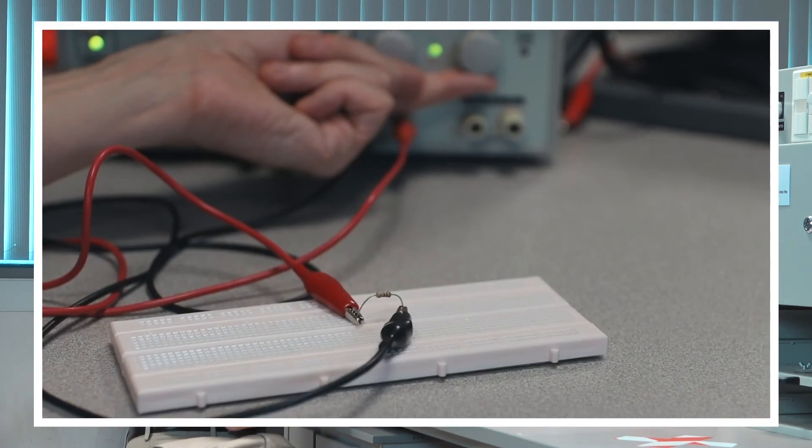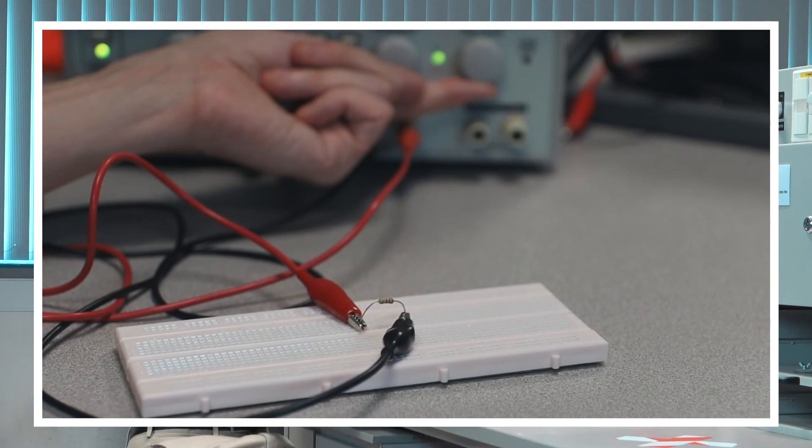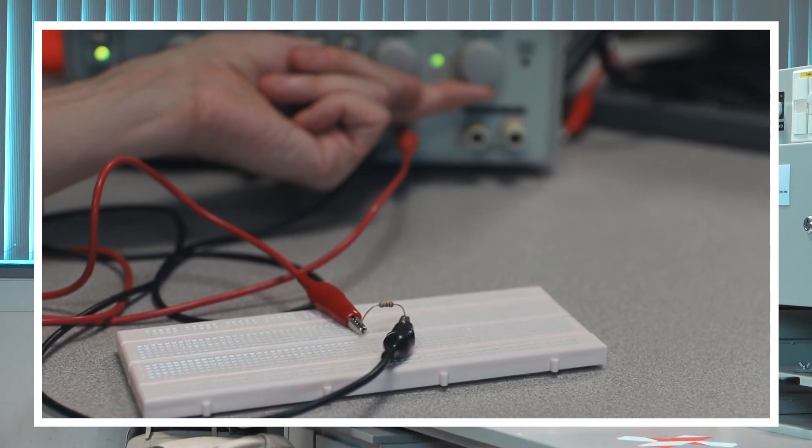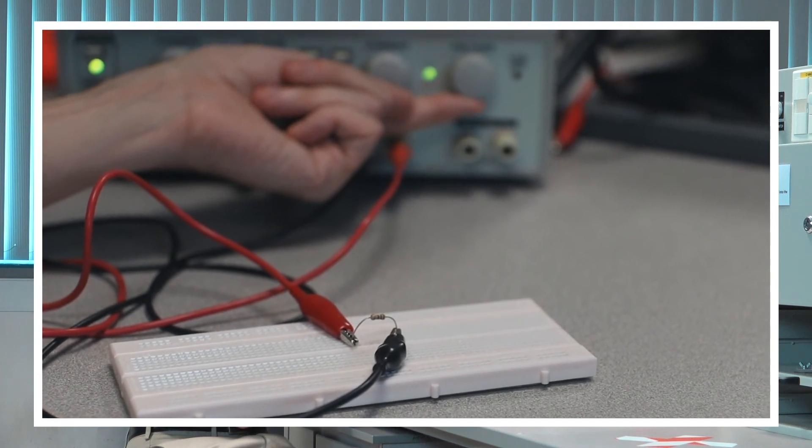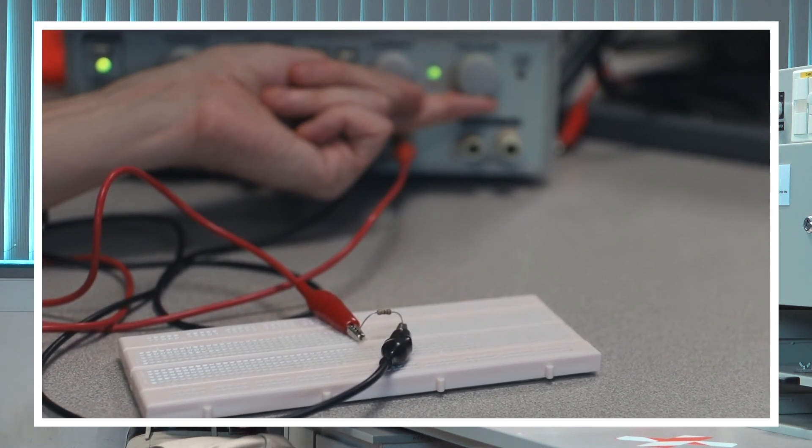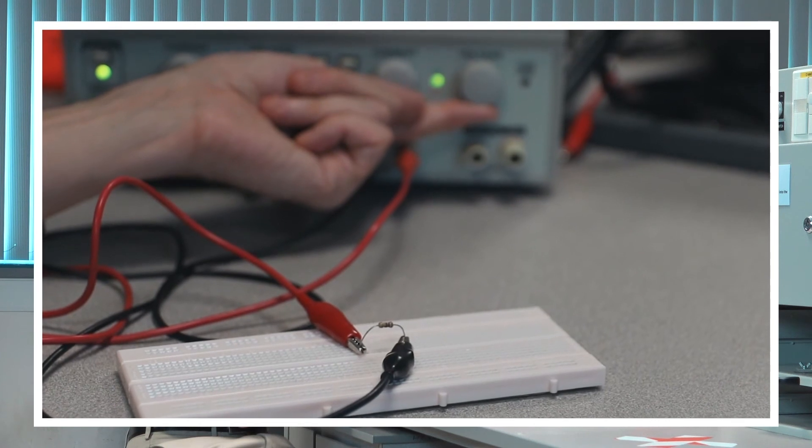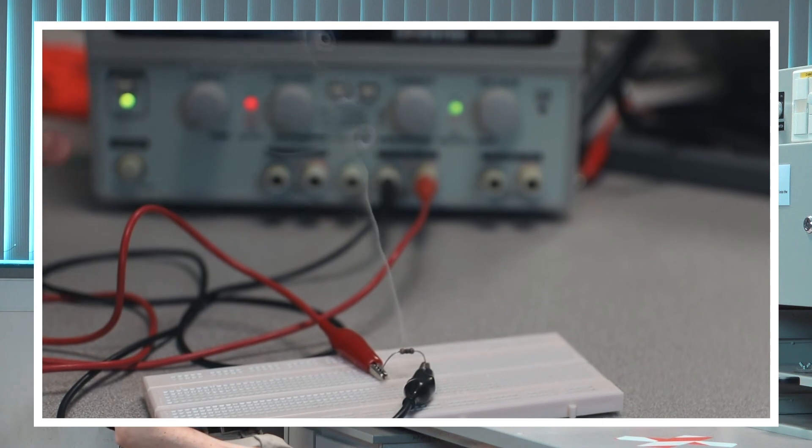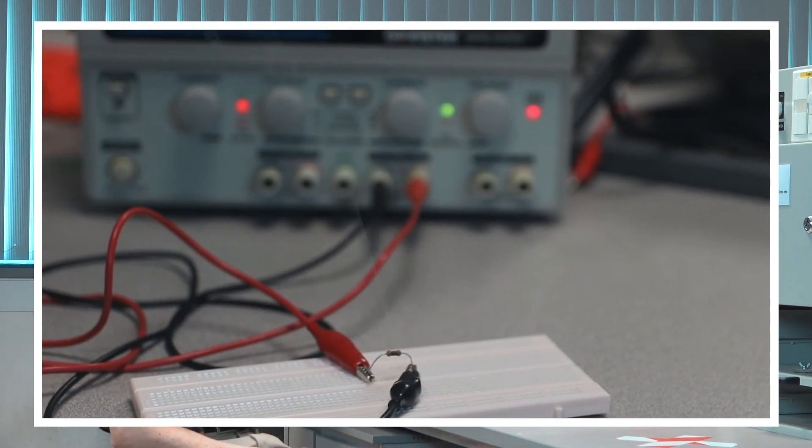If I start turning it up, eventually I'm going to hit the point where V times I exceeds a quarter watt. When that happens, the resistor is going to have a problem because it won't be able to dissipate the power that I'm trying to supply to it. So I'm increasing it rather slowly. Okay, there the resistor has a problem. It's unable to dissipate this much power. Let me turn off the output.